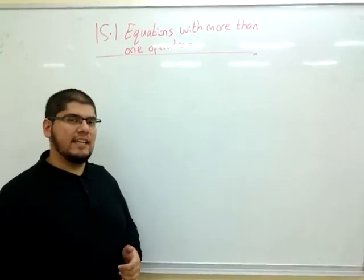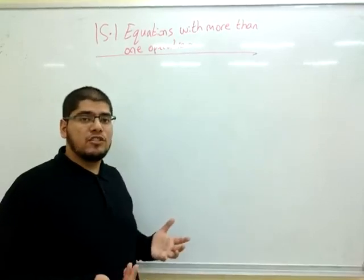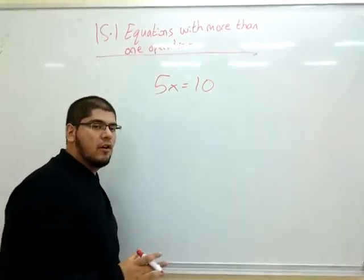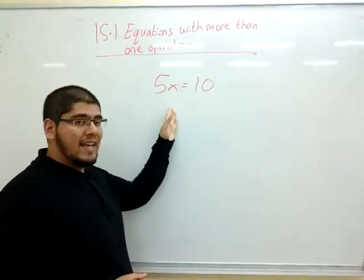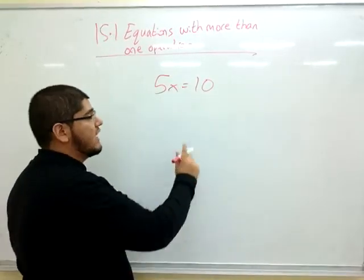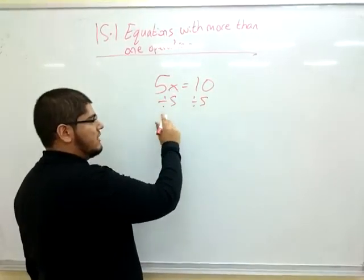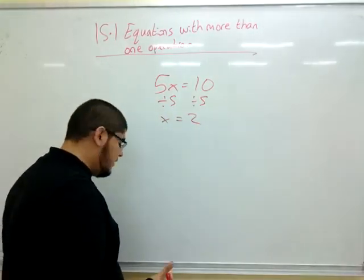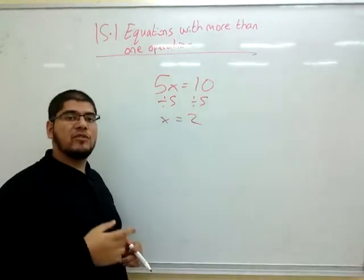Now you've already seen solving equations with one operation, such as 5x equals 10. This has only one operation, because to solve for x, you need to divide both sides by 5, and then you will get x equals 10 divided by 5, which is 2. So this is the first step to solve the equation with one operation.